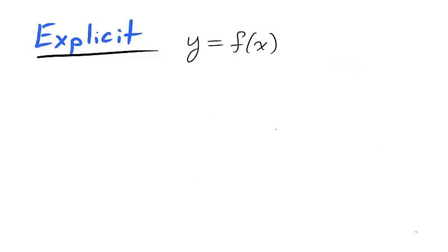When a function is written in the form y equals f of x, where the y variable only appears on the left hand side, we say that the function f is explicitly described. The equations of the top semicircle and bottom semicircle are written explicitly.